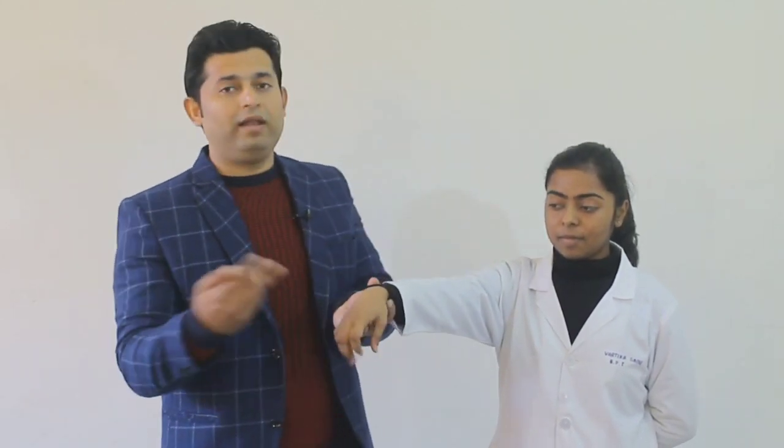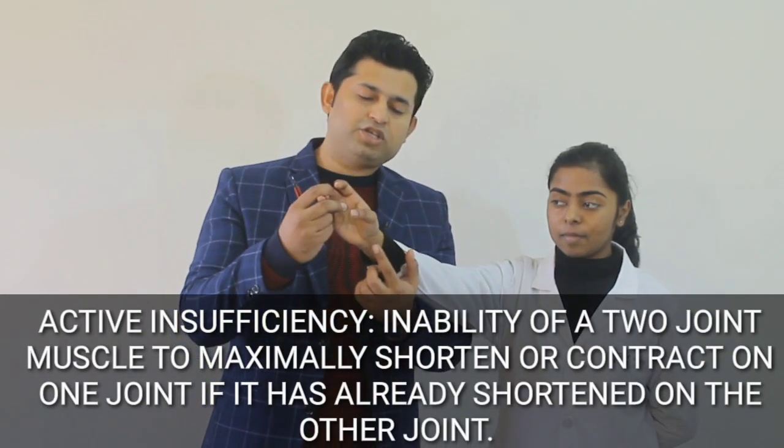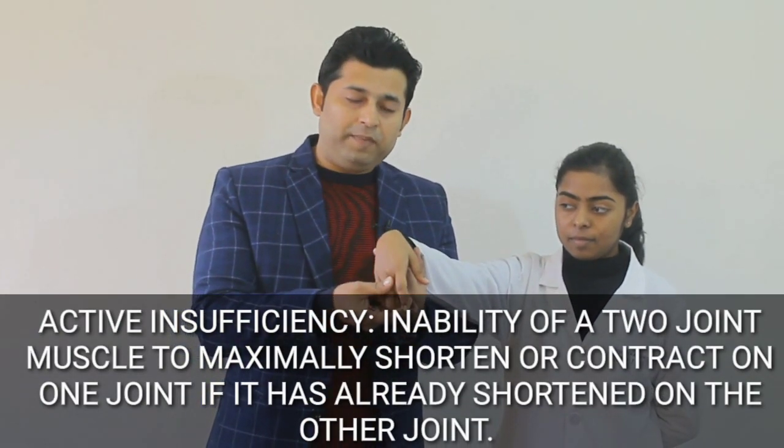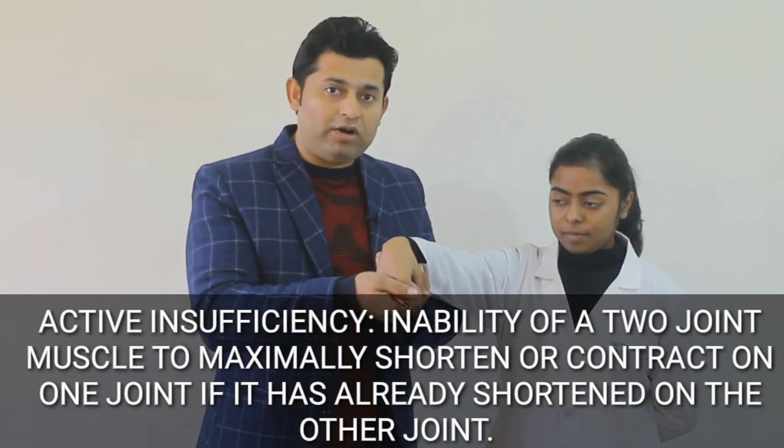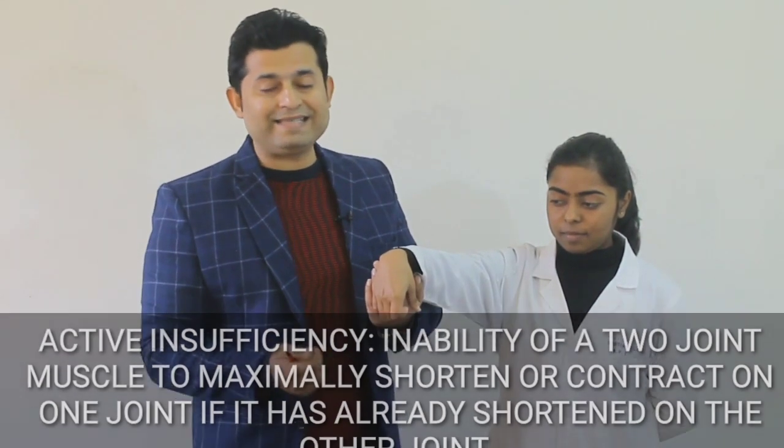To recap: if a muscle is shortened at one joint — meaning it is already contracted there — its ability to further shorten or contract at the other joint is significantly reduced, and the force generation by the muscle is less. This is known as active insufficiency. Let's take two more examples to understand this concept in a more simplified manner.